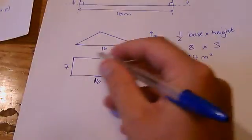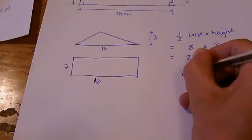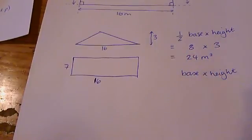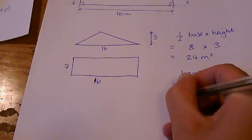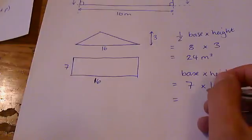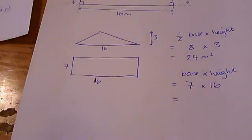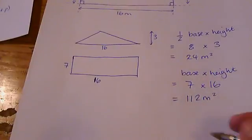The area of this one is a rectangle, so I use the correct formula: base times height. No half this time. And that's 7 times 16. And I think that's, what, 70 plus 42, 112. Let's just check that. Yes, that's 112 meters squared.